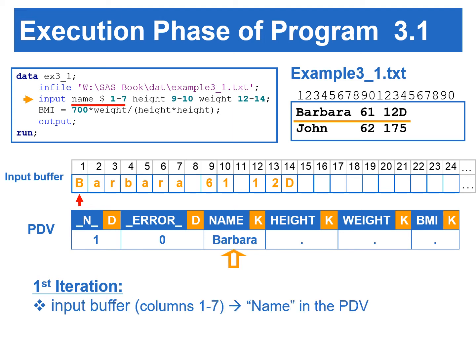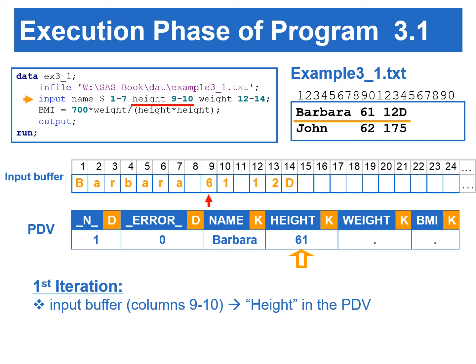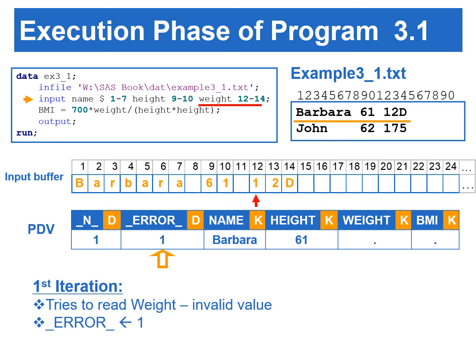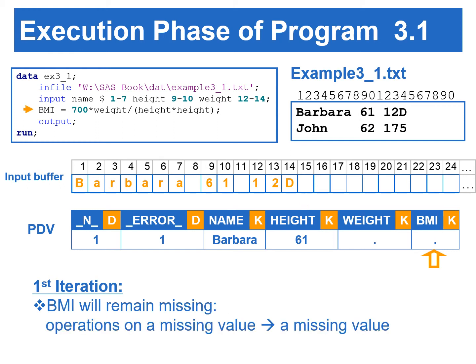The value for the name variable, specified from column 1 to 7, is copied to the name slot in the PDV. Then the input pointer points at column 8. SAS copies the values from columns 9 to 10 to the height slot in the PDV. Then the input pointer points to column 11. The value for the weight variable is entered as 12D, which is an invalid numeric value. Therefore, the weight variable is set to missing. The _ERROR_ variable is set to 1, and an error message is sent to the SAS log indicating the location of the data error. The input pointer points to column 15. Next, the assignment statement is executed, and BMI will remain missing, since operations on a missing value result in a missing value.